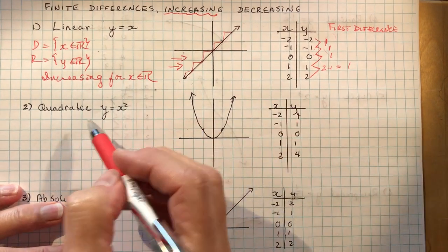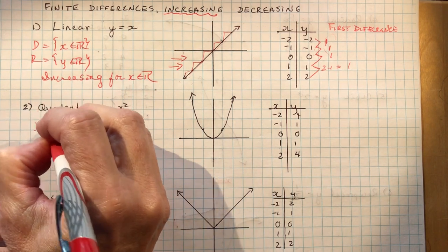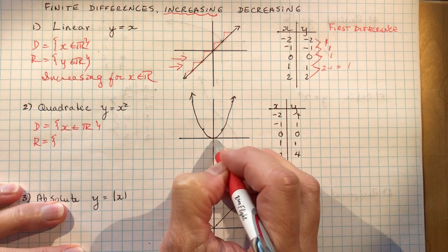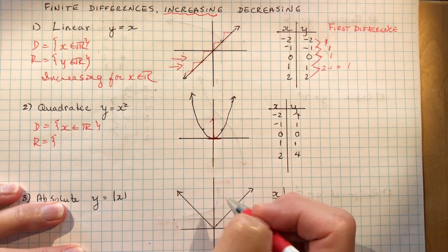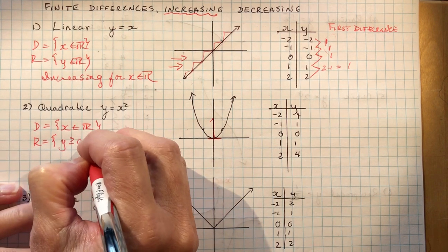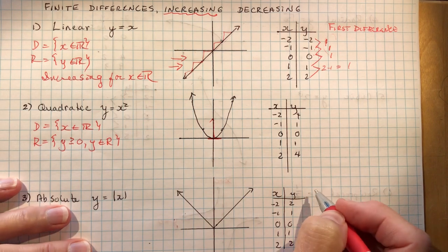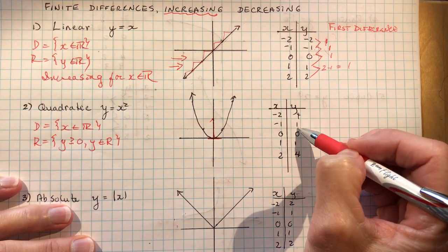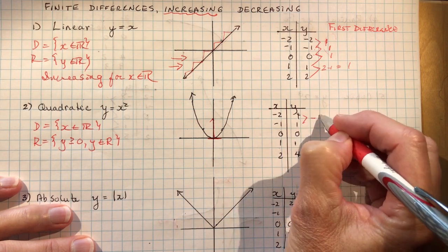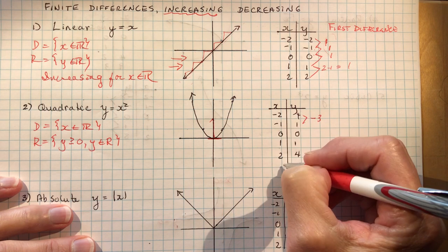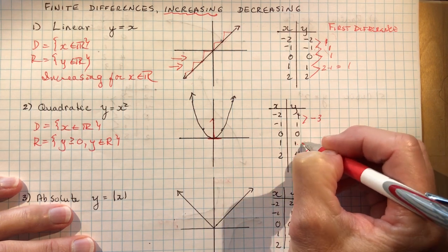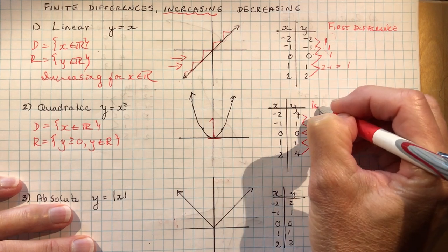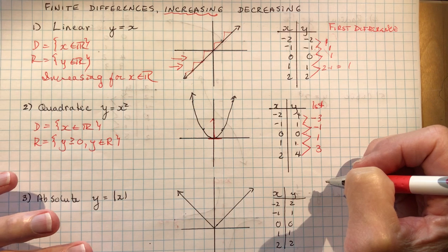Moving on to the quadratic, y equals x squared. The domain is x is an element of real numbers — you can plug in any value for x and get an answer for y. The range is a little different for this graph because I have to look at where it starts and where it goes. In this case, y is greater than or equal to 0, y is an element of real numbers. Looking at the finite differences: going from x = -2 to x = -1, the y value goes down by 3, so the first difference is -3.